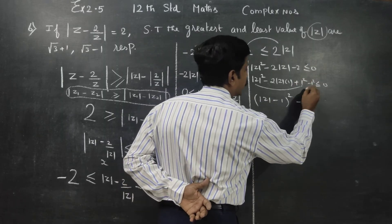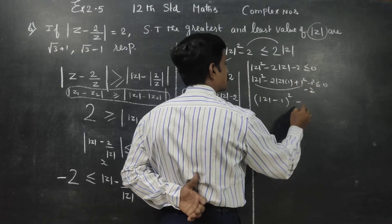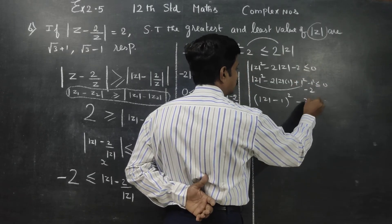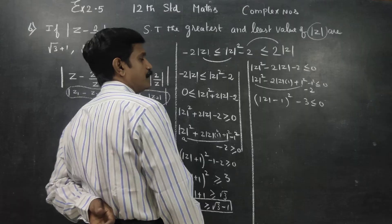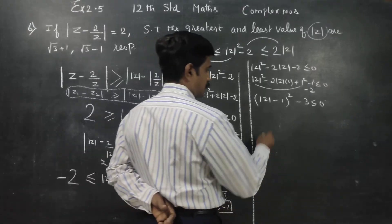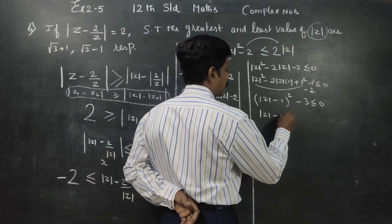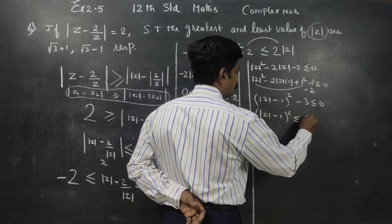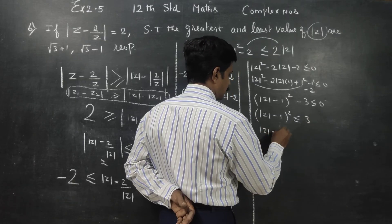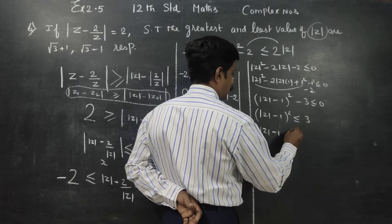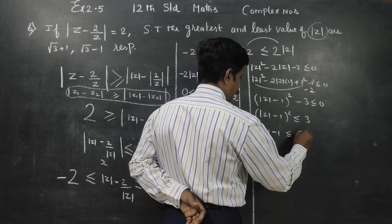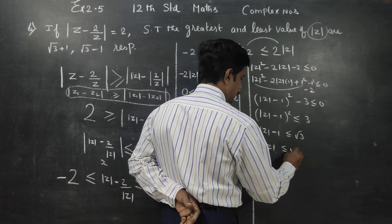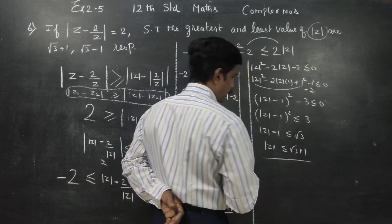This gives modulus of z minus 1 whole square minus 3 is less than or equal to 0. Therefore modulus of z minus 1 whole square is less than or equal to 3. Taking square root: modulus of z minus 1 is less than or equal to root 3, so modulus of z is less than or equal to root 3 plus 1.